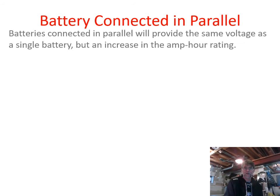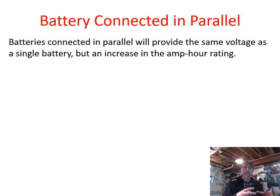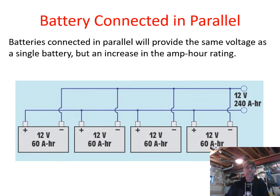What if we connect batteries in parallel? Batteries connected in parallel will provide the same voltage as any single battery in the bank, but with an increase in the amp-hour rating. In a parallel circuit, every branch gets the same voltage, so when we place multiple voltage sources in parallel we don't add the voltages — the output stays the same. However, we do increase the current, and therefore the amp-hour rating gets added up.